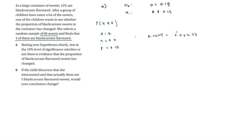We compare this to the significance level of 10%, but since it's a two-tailed test that becomes 5%. Since 0.04237 is less than 0.05, we reject H0. We can conclude that the proportion has changed — the probability is no longer 0.15.